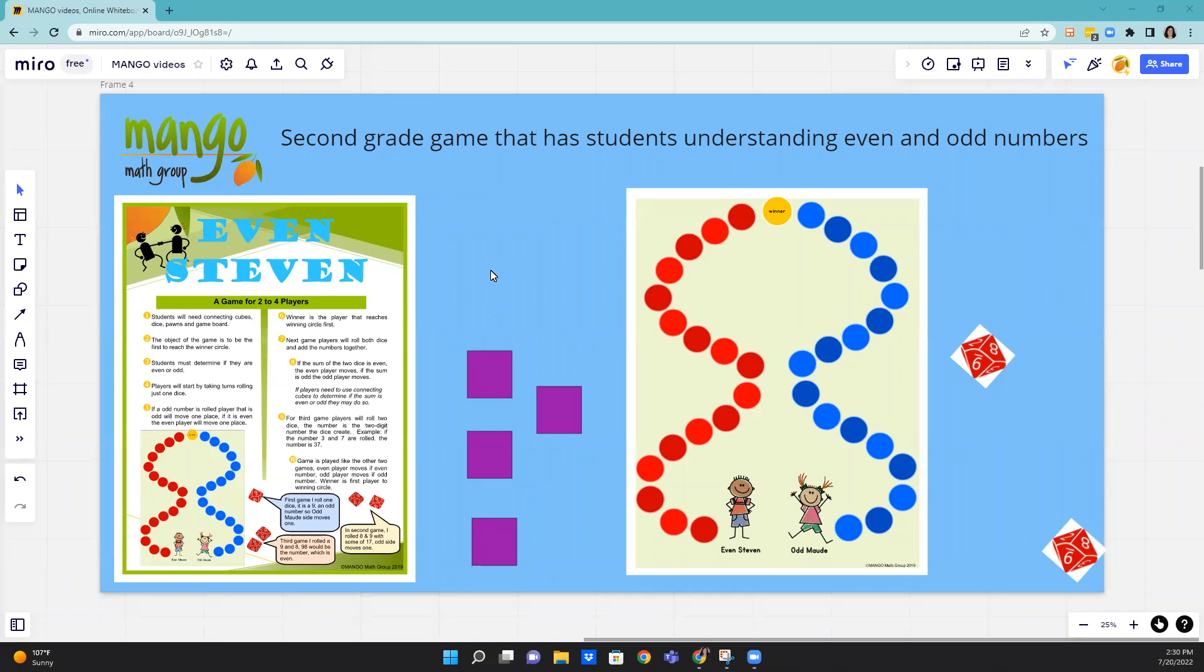Hello, this is Mary Currie with Mango Math, and this is a game out of our second grade kit called Even Steven. It helps students understand even and odd numbers.